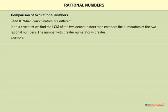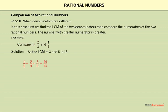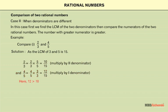Case 2: when the denominators are different. In this case, first we find the LCM of the two denominators, then compare the numerators. The number with the greater numerator is greater. For example, to compare 2 by 3 and 4 by 5: the LCM of 3 and 5 is 15. Multiplying, we get 10 by 15 and 12 by 15. Since 12 is greater than 10, 4 by 5 is greater than 2 by 3.